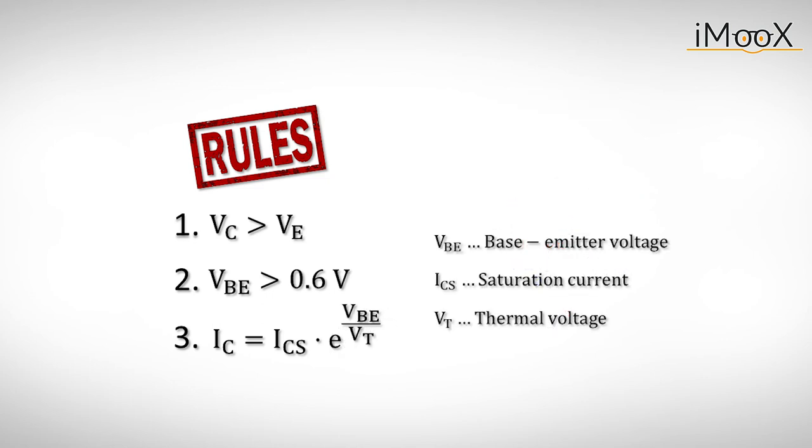For now, we are happy with the simplified version of this equation, which will suffice for all our purposes. It accounts for all major dependencies of IC, like the base emitter voltage VBE, the saturation current ICS, and the temperature, which is expressed by VT.